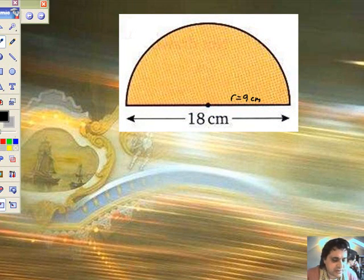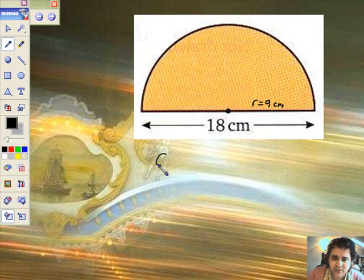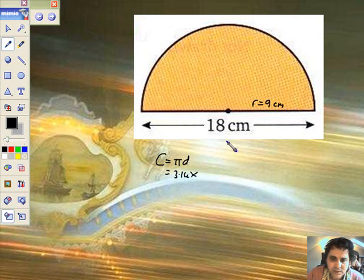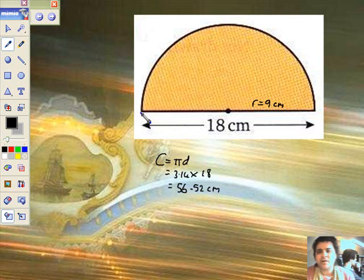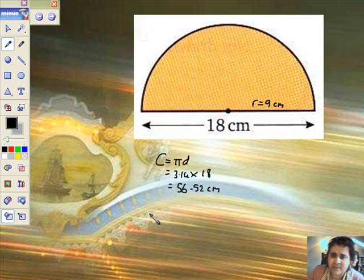Now how do we work out the circumference of a circle? I like to use C equals pi times D, because I'm given a D. So it equals 3.14 times the diameter of 18. Let's pick up the marks for that. So 3.14 times 18, we've got 56.52 centimetres. Please note that is an entire circumference all the way around here as well. Now, this is only a semicircle, so the next step, divide by 2.